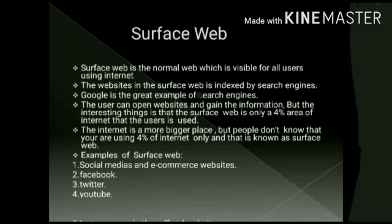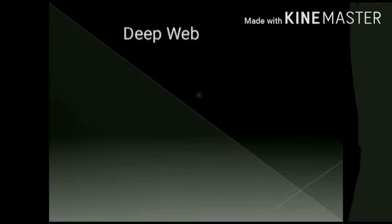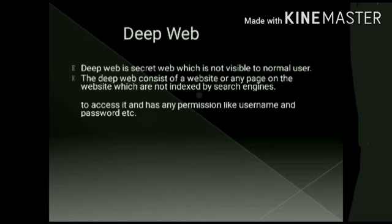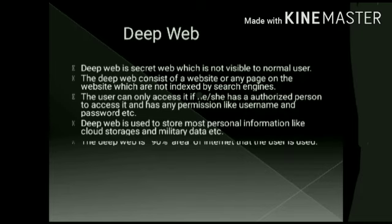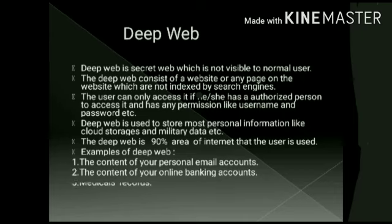There are many users and computers on the Surface Web. Next is the Deep Web. This Deep Web is a secret web — it is not visible to ordinary users, only to authorized persons. You need a username to access it. It occupies about 90% of the internet. Examples include Gmail, bank accounts, legal records, and military data.